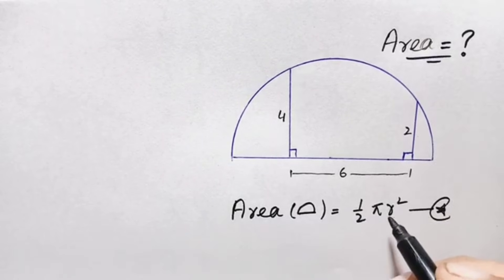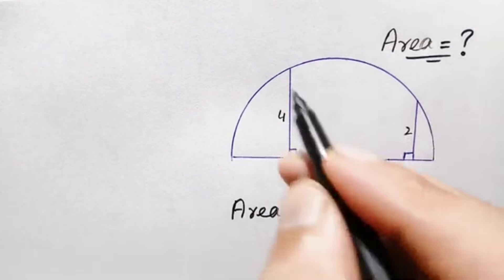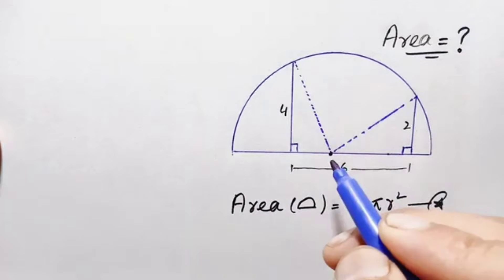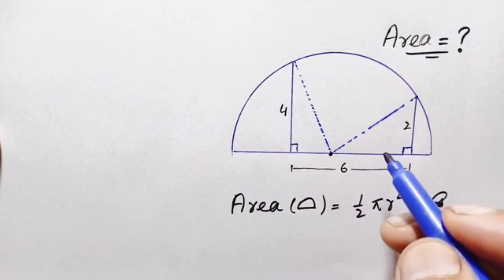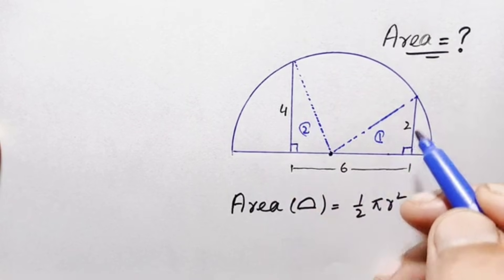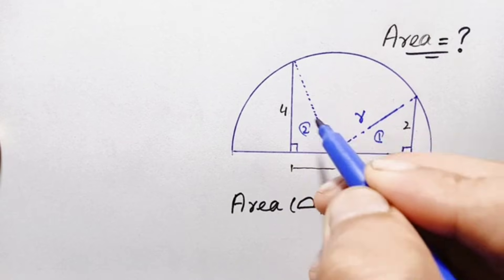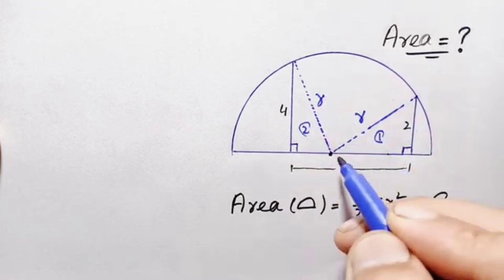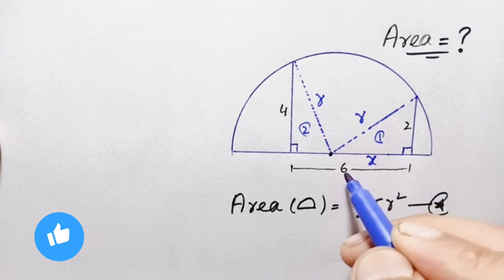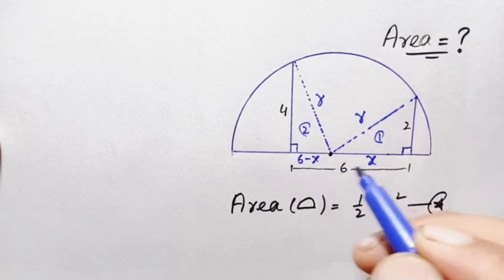To find the value of r², we will connect the center to two points on the semicircle to make two right-angle triangles. After connecting, let us suppose this is our first right-angle triangle and this is our second. The perpendicular in the first triangle is given, and since this is the radius, this side will be r. Let us suppose this base length is x, so the distance from the second perpendicular will be 6 minus x units.